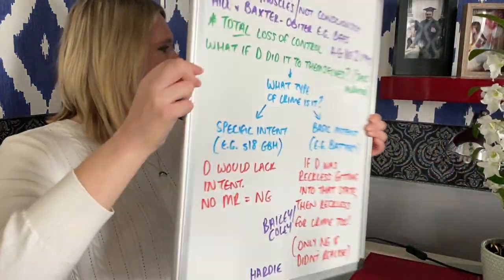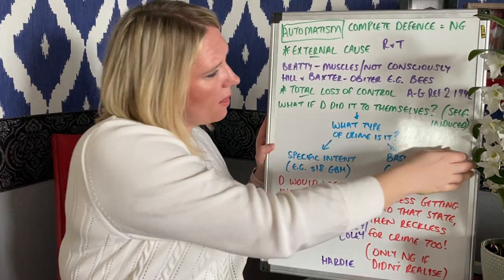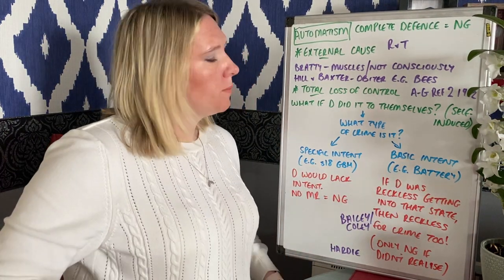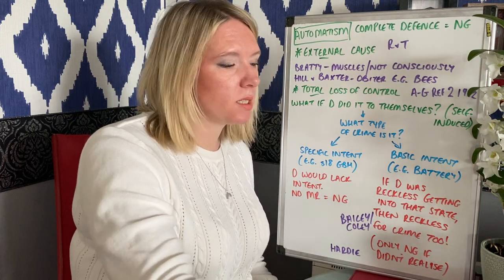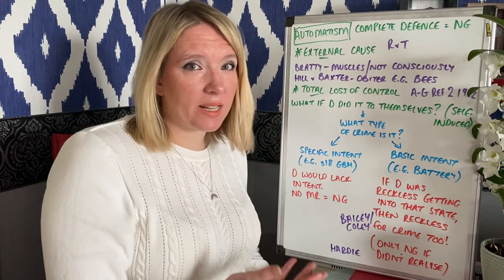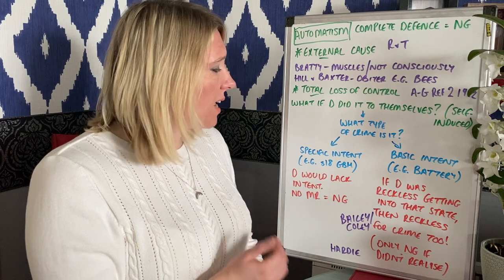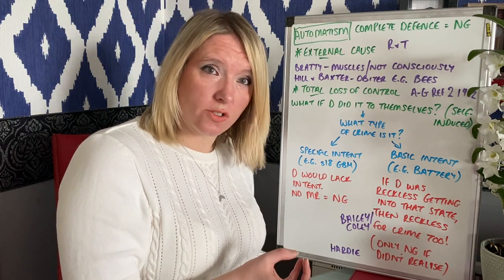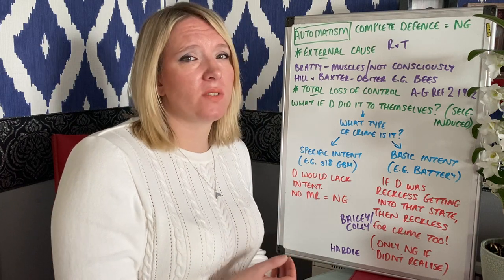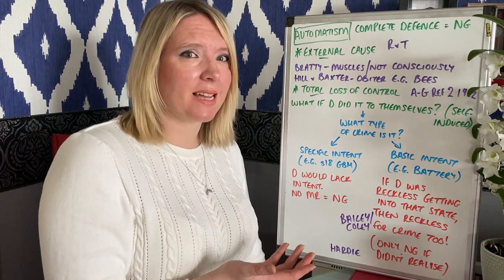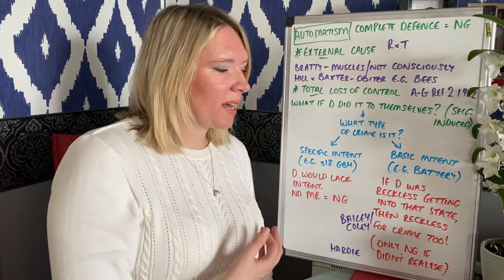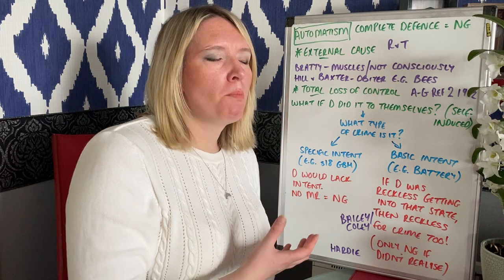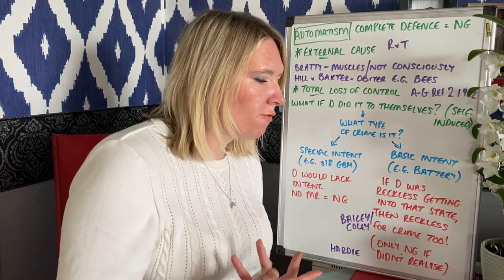Moving to external causes: automatism is a complete defense with no caveats — if you successfully argue automatism, you are simply not guilty. There are two main elements. First, it must be an external cause; if it's internal, you would have to use insanity instead, even if that carries a stigma.